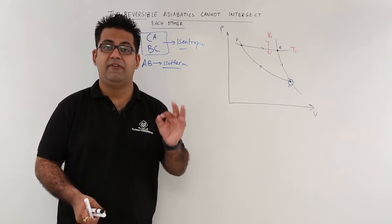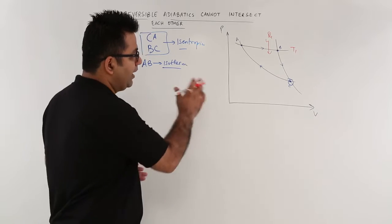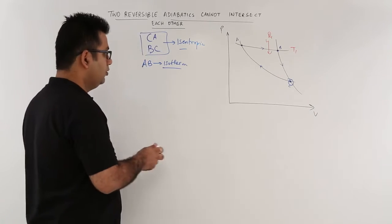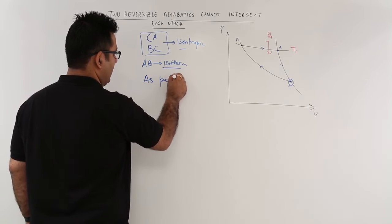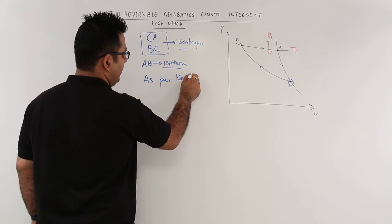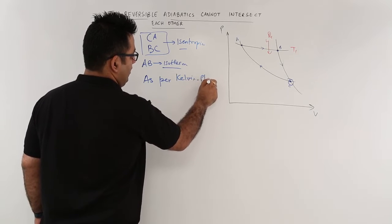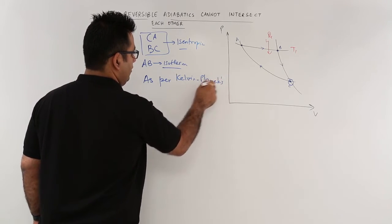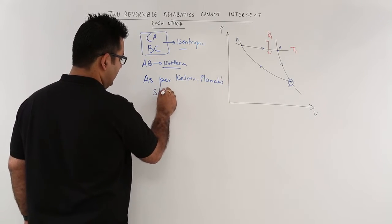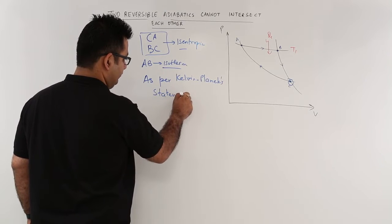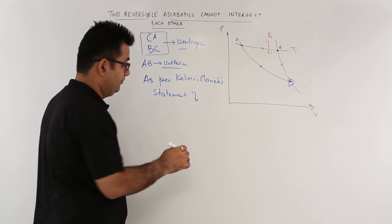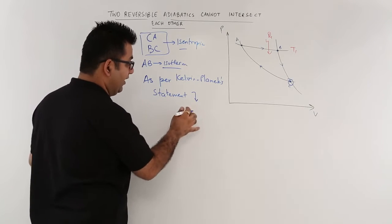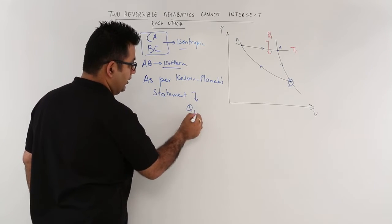Now this is violating the Kelvin-Planck statement for the second law. As per the Kelvin-Planck statement, you cannot have or you should have some heat rejection.